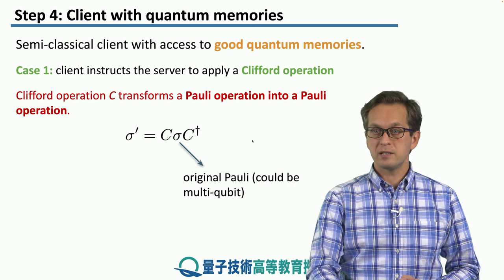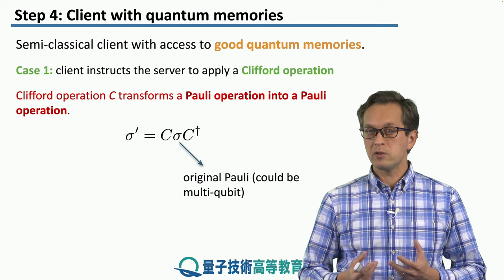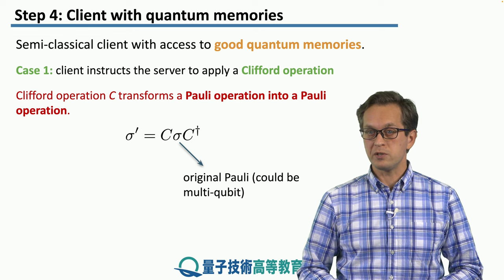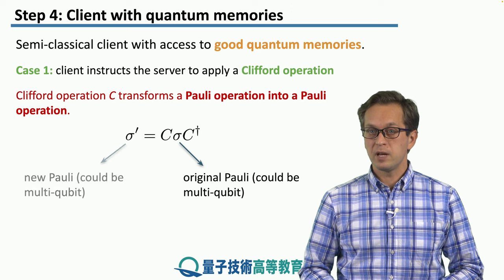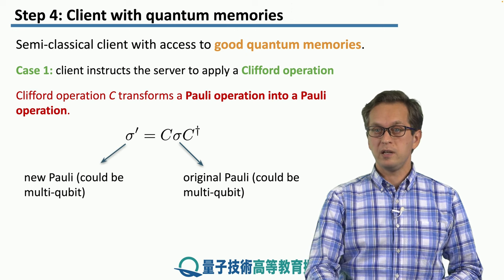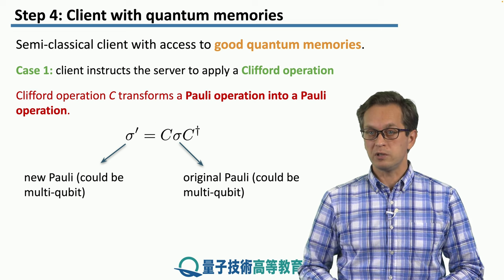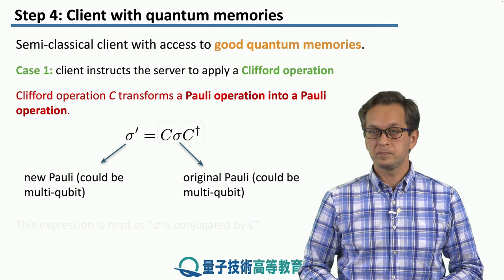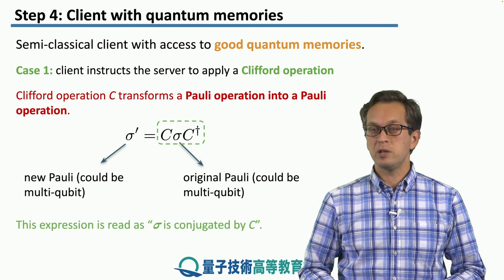Mathematically, we would write it in the following way: sigma prime is equal to C times sigma times C dagger. Here, sigma is the original Pauli operation. It could be a single qubit operation, but it could also be a multi-qubit operation — a tensor product of Paulis acting on different qubits. Sigma prime is the new Pauli operation, and C and C dagger are the Clifford operation and its Hermitian conjugate. We read this expression as sigma is conjugated by C.